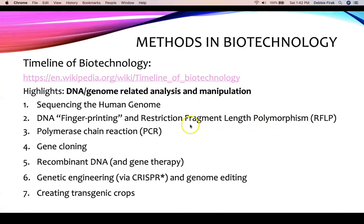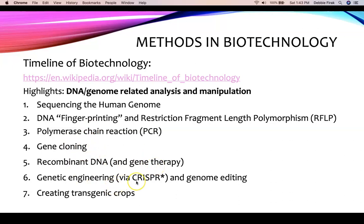Some highlights in DNA and genome-related analysis and manipulation include sequencing the human genome, DNA fingerprinting and restriction fragment length polymorphism — RFLP for short — polymerase chain reaction, which amplifies a small part of a DNA sample, gene cloning, recombinant DNA and gene therapy, genetic engineering using the powerful new tool called CRISPR, genome editing, and also creating transgenic crops.